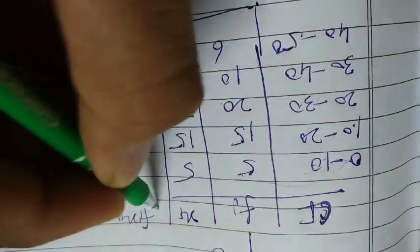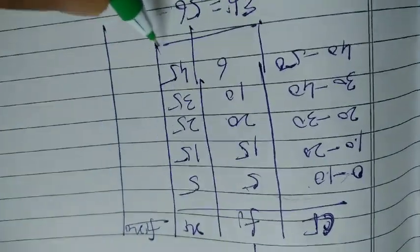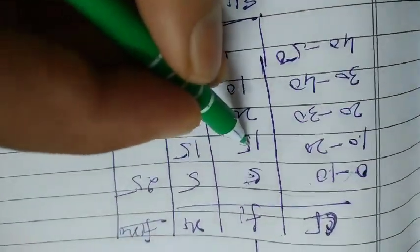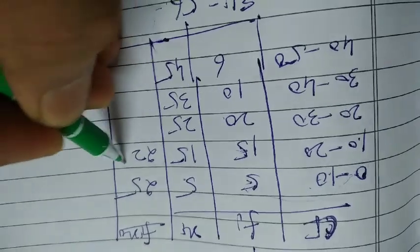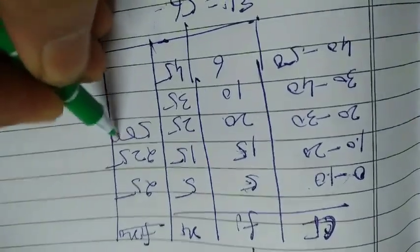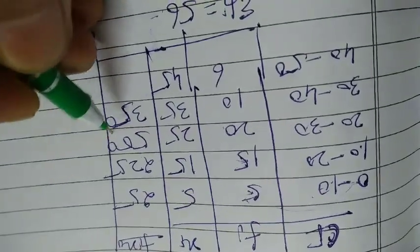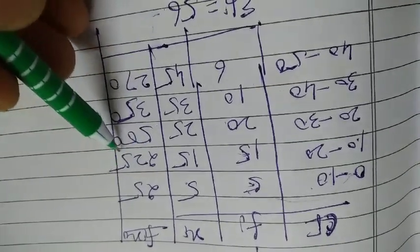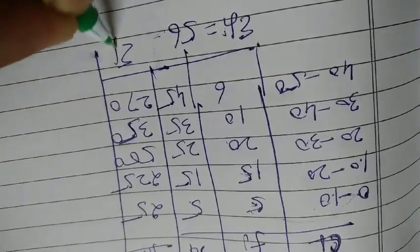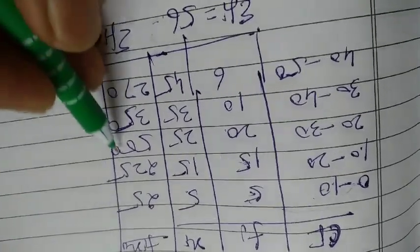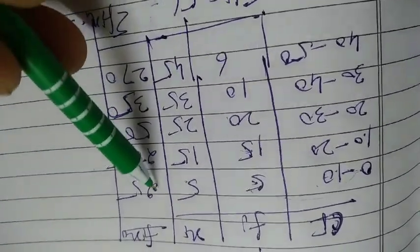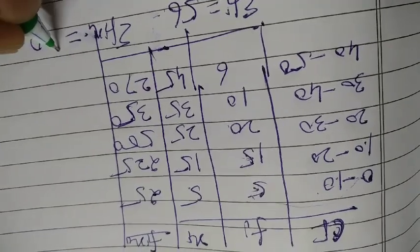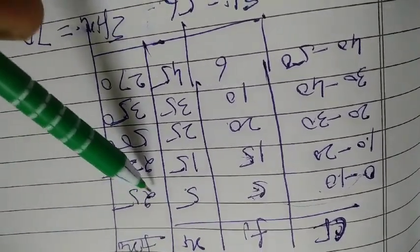Find Fi Xi. It becomes here 5 times 5 equals 25, 15 times 15 equals 225, 20 times 25 equals 500, 10 times 35 equals 350, and 6 times 45 equals 270. Now after adding it, summation Fi Xi is equal to 25 plus 225 plus 500 plus 350 plus 270.